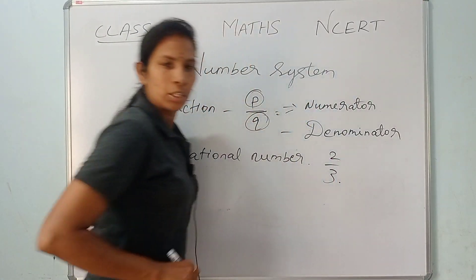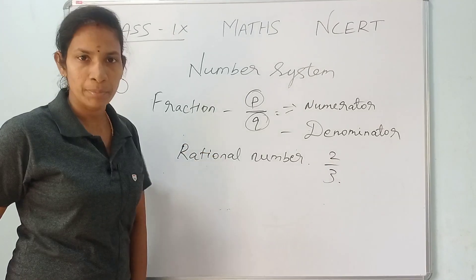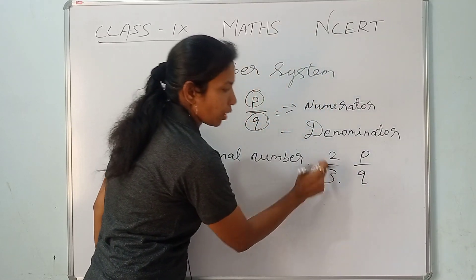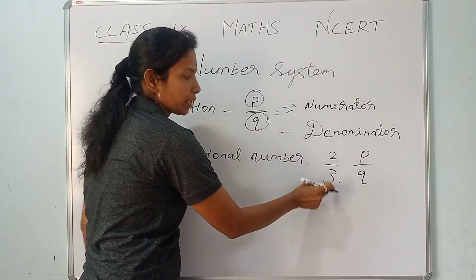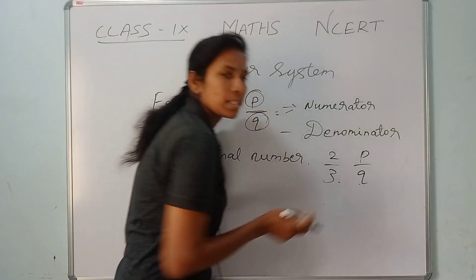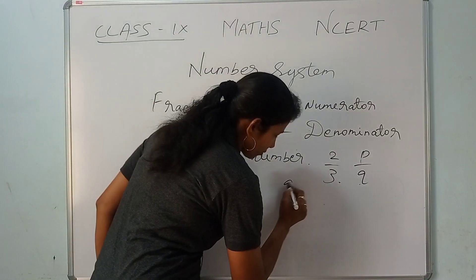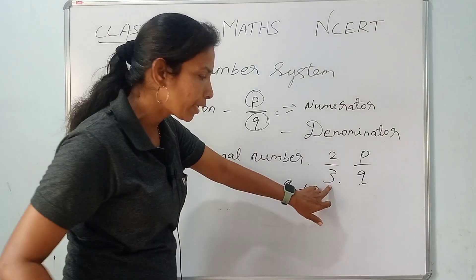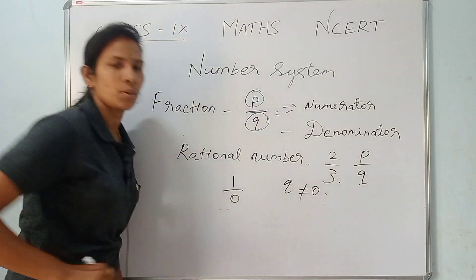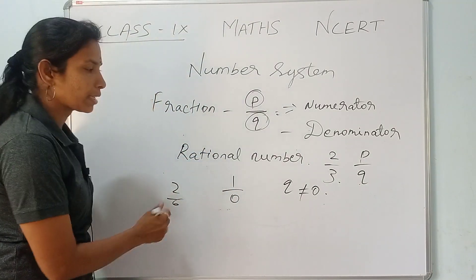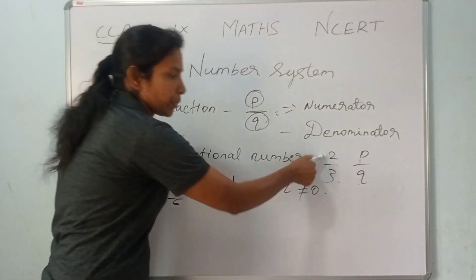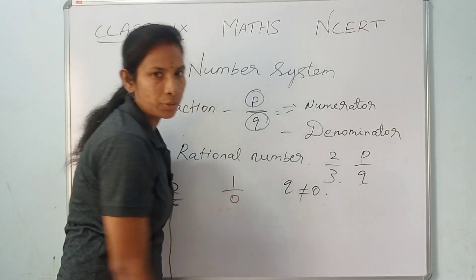For example, 2 by 3 is a fractional number and a rational number. In the P/Q formula, P is the numerator and Q is the denominator. An important condition is that Q is not equal to 0 — the denominator cannot be 0. So 1 by 0 is not a rational number because Q equals 0.